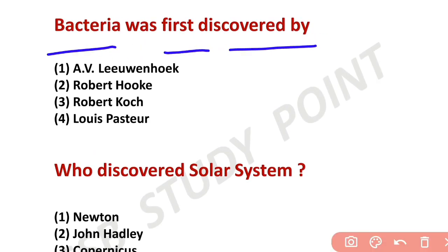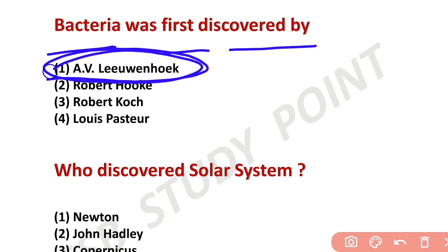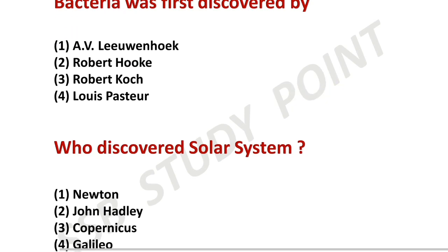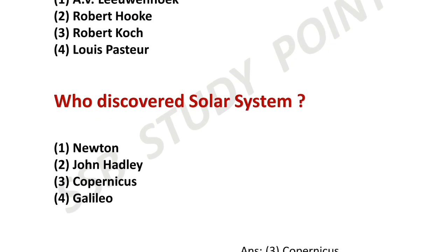Bacteria was first discovered — check the biology class for reference. Bacteria was discovered by Antonie van Leeuwenhoek. Robert Hooke discovered the cell. So: cell discovery is Robert Hooke, and bacteria discovery is Leeuwenhoek.